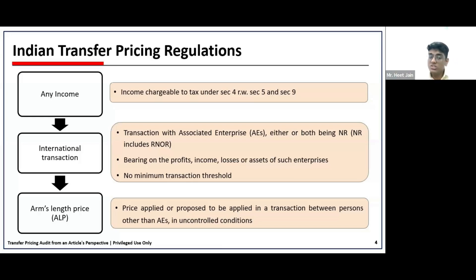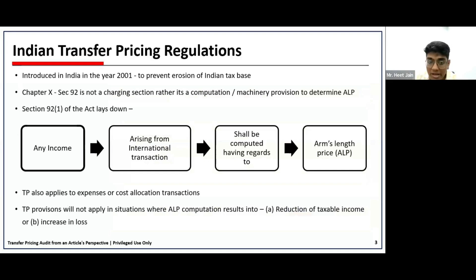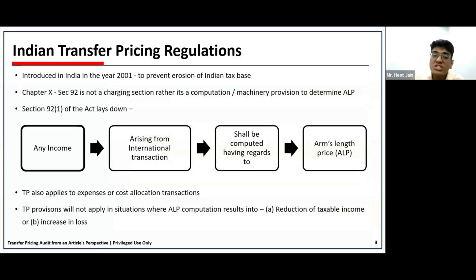To summarize, transfer pricing provisions affect any income arising from an international transaction between associated enterprises — either or both being non-resident — which should be compared at arm's length price. Section 92.3 says that transfer pricing provisions shall not apply when there is a reduction in taxable income or when there is an increase in loss. The intent is clear: transfer pricing regulations were introduced to avoid profit shifting and prevent erosion of Indian tax base, so anything leading to reduction in taxable income would not require arm's length assessment.